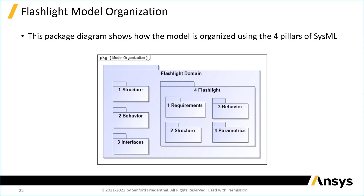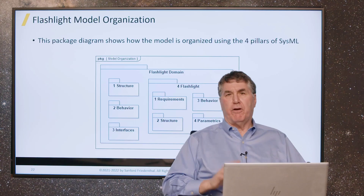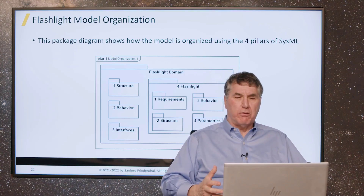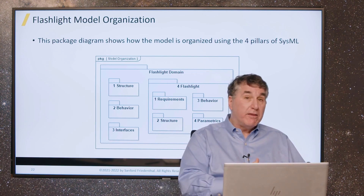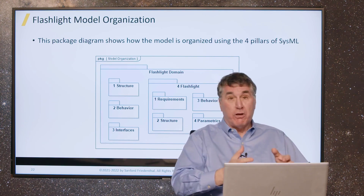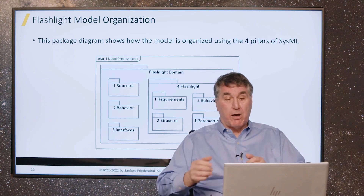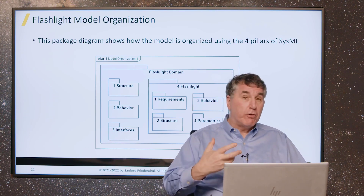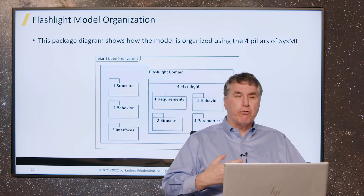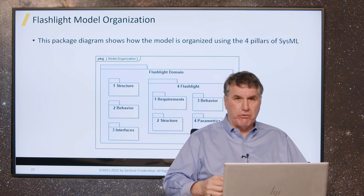In a typical system model, you can have hundreds of thousands of elements. An element is not a part — an element could be an attribute of a part. The models can get very, very large, and it becomes critical that you organize these models so that you can find things, manage change, navigate the model, and reuse parts of the model. It's critically important to have what's called a model organization.